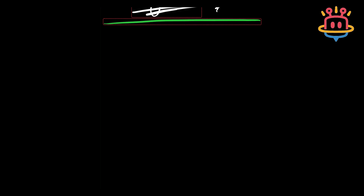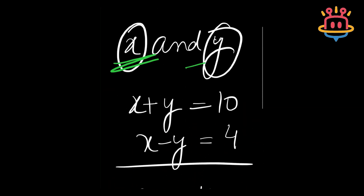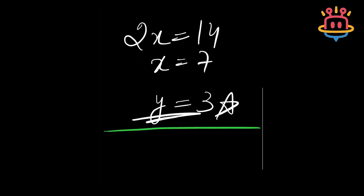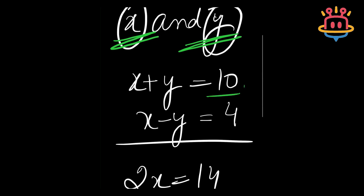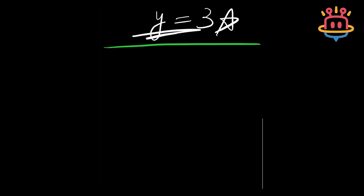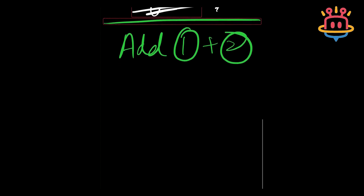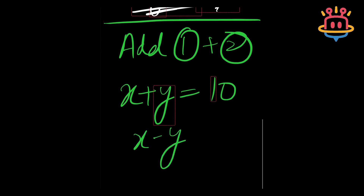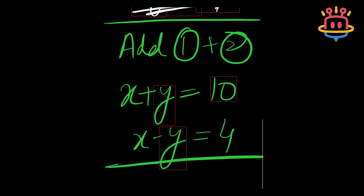So my dear explorers, in order to solve the secret mystery and find the values of x and y, here is what we will do. Step number one: we will add both of the equations given to us — equation one and equation two. So when I add x plus y equals 10 and x minus y equals 4, I get my answer.